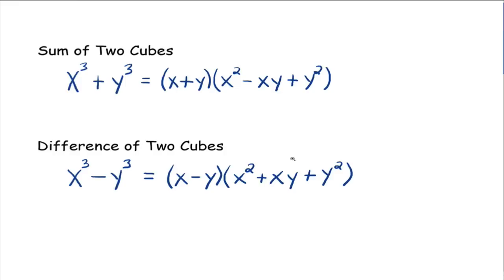These are very similar formulas, and I don't think you need to think of them as two separate formulas to memorize. What we need to understand is the pattern. Whether you have x cubed plus y cubed or x cubed minus y cubed, you still have a binomial times a trinomial. If you have the sum of two cubes, the binomial has a plus — x plus y. If you have the difference of two cubes, the binomial has a minus — x minus y.